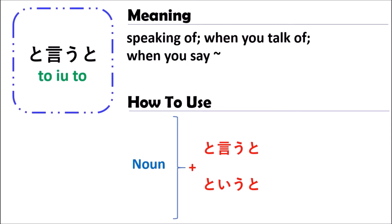The second one is written in hiragana. They have the same meaning — it just depends on you, no problem which one you want to use. It has the meaning of 'speaking of,' 'when you talk of,' or 'when you're saying about.' To understand more about how to use this grammar, we are going to look at some examples together.